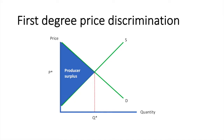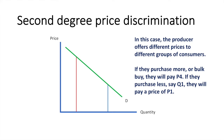Now let's move on to second degree price discrimination. For second degree price discrimination, the producer offers different prices to different groups of consumers. Unlike first degree price discrimination, consumers are broken into groups that receive different prices based on the quantity they purchase. If they purchase more or bulk buy, they will pay P4. If they purchase less, say Q1, they will pay a price of P1.